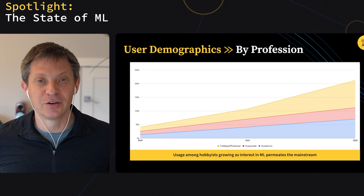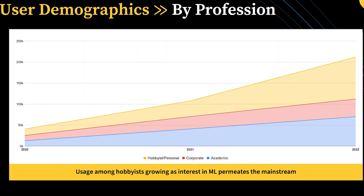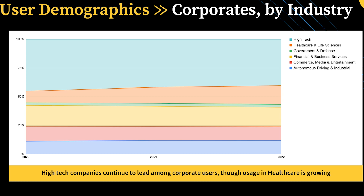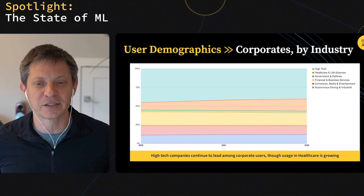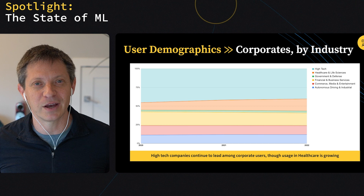When you look by profession, usage in both academics and corporates continues to increase year on year, but we also see an acceleration in usage among personal users and hobbyists, which we think reflects the broader interest across the population in ML. We're seeing more individual users trying out models, learning and getting exposure to ML. When you look at corporate usage sliced by industry, it's a 100% chart — all industries are growing year on year — but notably the healthcare and life sciences slice is growing a bit faster than the rest, which we found interesting.